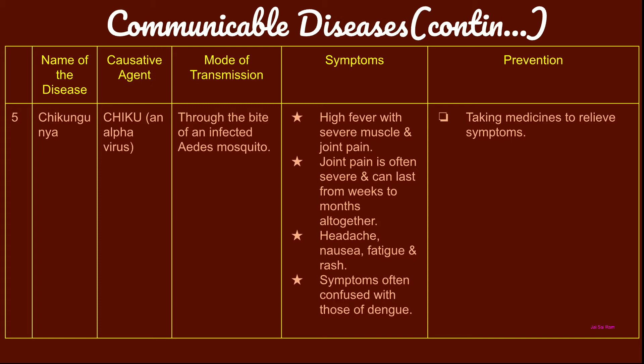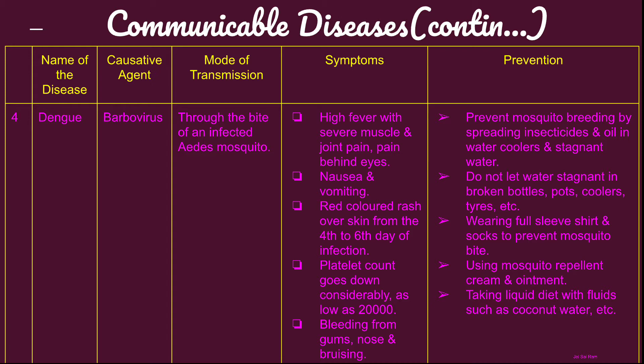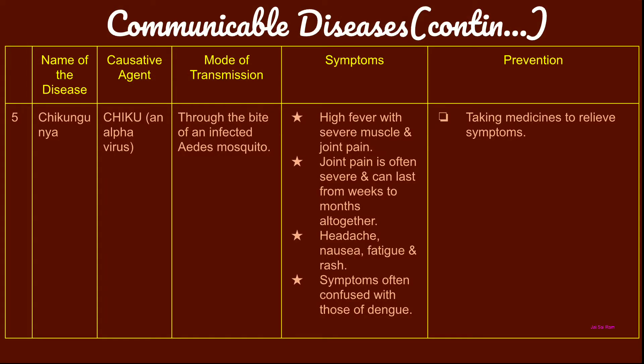Chikungunya is also a viral infection caused by an alpha virus. Its mode of transmission is through the bite of the Aedes mosquito, which is the transmitting agent. The symptoms include high fever with severe muscle and joint pain — joint pain is often severe and can last from weeks to months — along with headache, nausea, fatigue, and rash. The symptoms are often confused with those of dengue, as both diseases have almost similar symptoms.